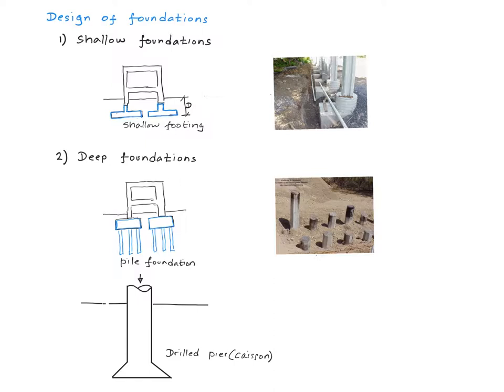Here's a picture of a real shallow foundation. The second class of foundations is called the deep foundation. There are two broader types within that. The first one is called the pile foundation. The second one is called the drilled pier or caissons. A deep foundation helps distribute a column load deeper into the soil. This picture shows a bunch of piles being driven into the ground. Once all the piles are driven into the ground, they cut the top of the piles to the same level and construct what is called a pile cap over it, and then the column is allowed to sit on the pile cap.